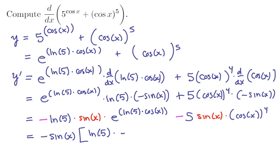times the natural exponential of ln of 5 times cos of x. The next term will be positive. There'll be a 5 and a cos of x to the 4th power left over.